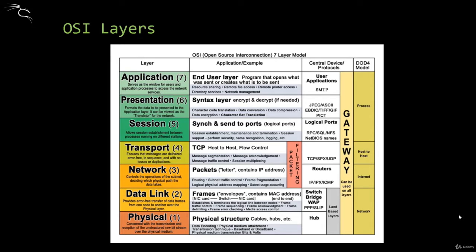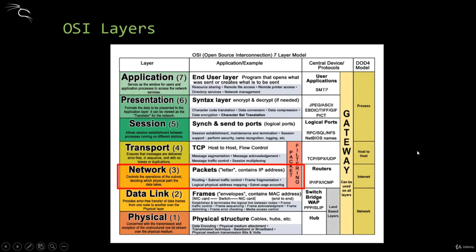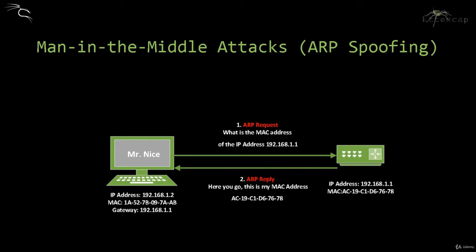The most important protocol we will discuss in this video is called the ARP protocol, which actually functions at the data link layer 2. It is responsible for translating IP addresses from layer 3 to MAC addresses. The example we will be giving under man-in-the-middle attacks is ARP spoofing, also called ARP cache poisoning or ARP poisoning — it has various names.